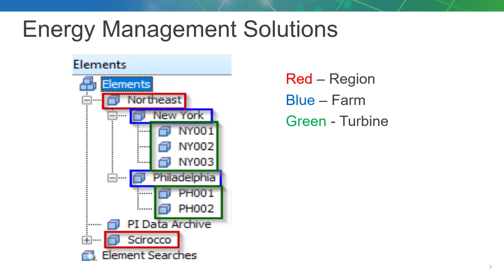Luckily, the company has just completed a project building out an AF database that has correctly templatized their AF assets. Their AF structure features three main levels: region in red, farm in blue, and turbine in green.